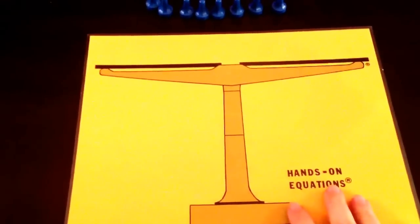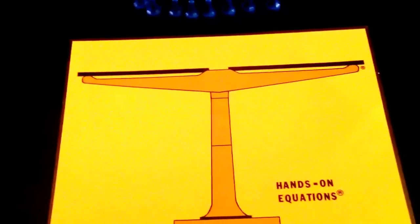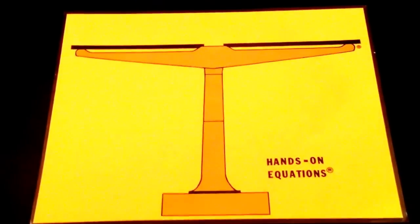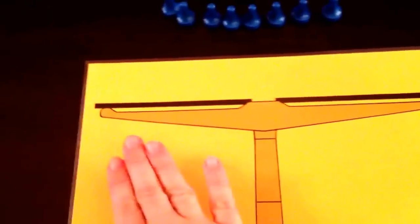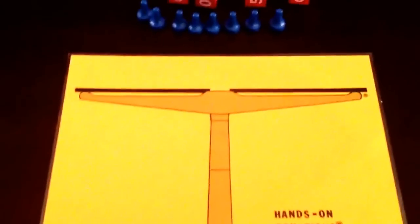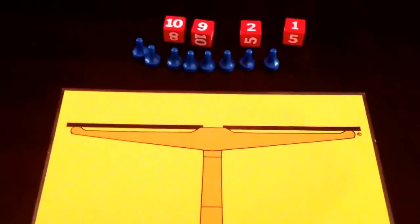You will have the balance scale. This is actually just a two-dimensional balance scale that will represent two equal sides. So whatever is on one side has to equal what's on the other. And we want to make sure that that stays balanced.